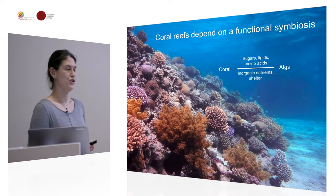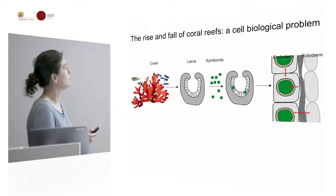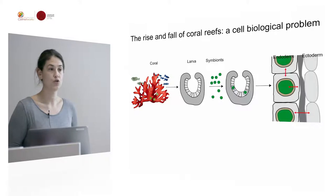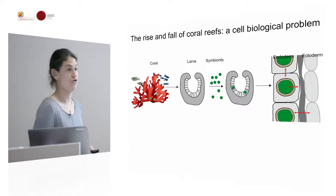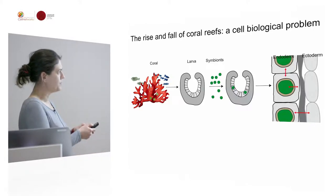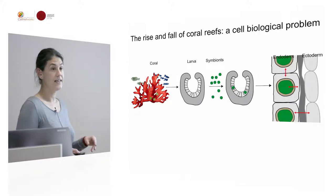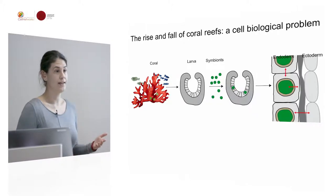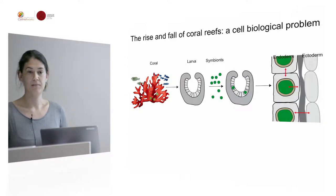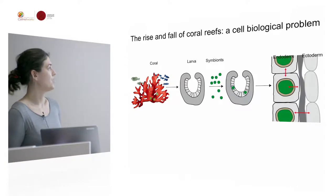To establish this symbiosis, most corals produce non-symbiotic larvae that actually have to acquire the symbionts in each generation from the environment. They do so by phagocytosing the symbionts into the endodermal cells, where they then reside to coordinate cellular functions such as, for example, the metabolic exchange.